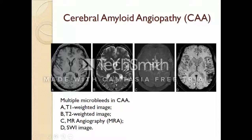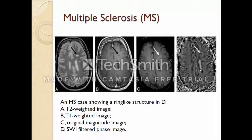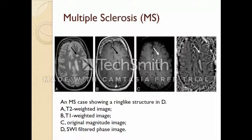You can also see these little dots as microbleeds distributed all over. Multiple sclerosis, called MS, is a relatively common acquired chronic demyelinating disease involving the central nervous system, affecting both the brain and spinal cord. Here is a special case of MS. In T2 weighted, T1 weighted, and the original magnitude image we can see this MS case. But due to iron deposition we can see a ring-like structure around some MS lesions, with iron appearing in a ring structure and a smaller amount scattered inside the lesion, appearing darker.